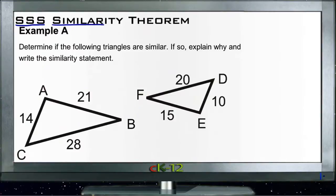What we need to do here for Example A is determine if the following triangles are similar, and if so, explain why they are and write the similarity statement. In order to find out whether or not they're similar, we need to find out whether or not the corresponding sides of the triangles are in the same ratio.